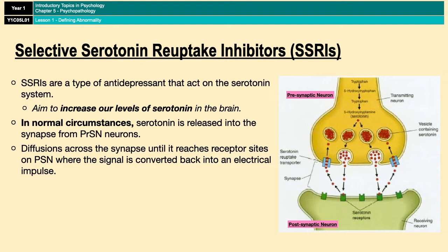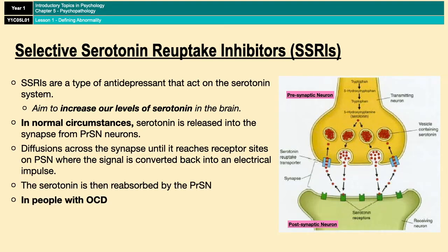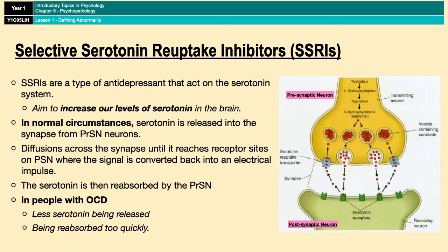The process then starts again. Now, in people who have OCD due to a lack of serotonin, one of two things is happening: either less serotonin is being produced, and so less serotonin is being released into the synapse, or the serotonin that is being released is being reabsorbed too quickly. Either way, it results in a reduced level of serotonin in the synapse, and therefore information about mood isn't being transmitted correctly.